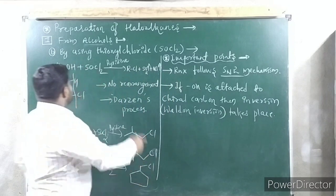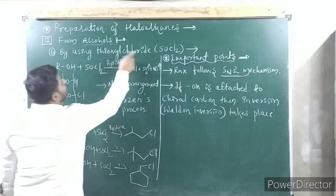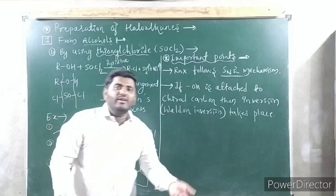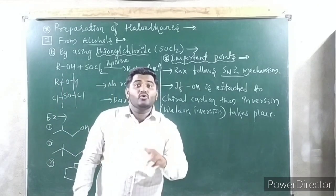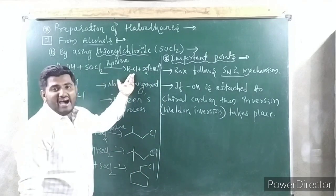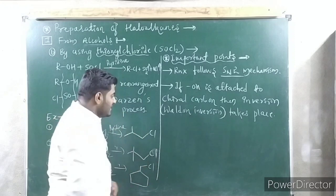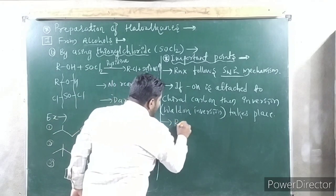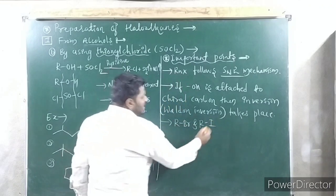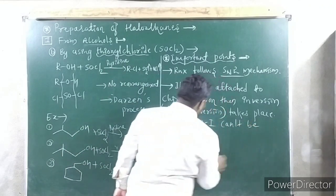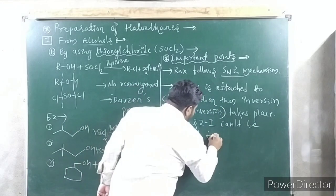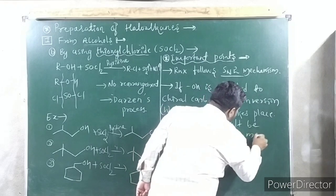We will discuss inversion, retention, and racemization in detail in the further part of the chapter. For now, remember: when OH is attached to a chiral carbon, inversion can be possible. Very importantly: here you have taken thionyl chloride — why not thionyl bromide (SOBr₂) or thionyl iodide (SOI₂)? Can we prepare RBr and RI from this method? No, never. Because SOBr₂ is unstable and SOI₂ does not exist.